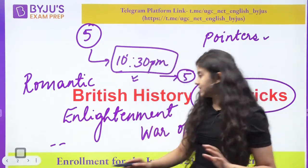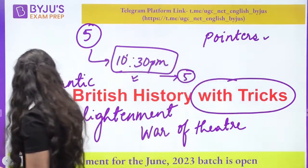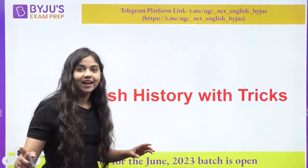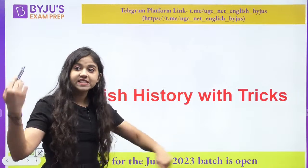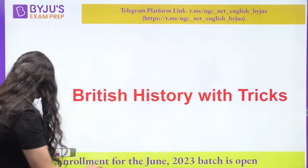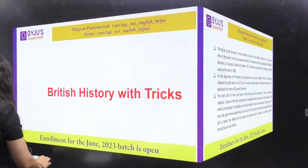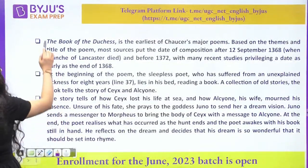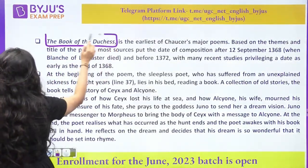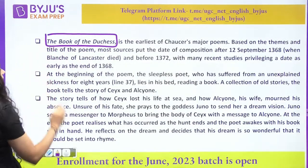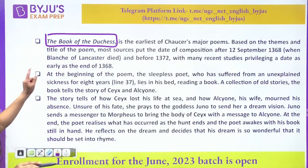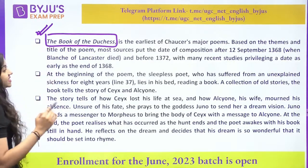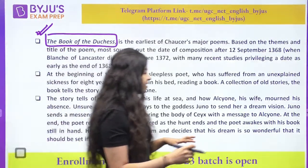Today we started the class with Chaucer's work, which features Morpheus. Remember the Book of Duchess — this is how you have to make connections and recollect everything. That is the first important point for British literature today: Book of Duchess by Geoffrey Chaucer. This particular work, Book of Duchess, was an elegy that was written. When we look at Book of Duchess, we can see the character of Morpheus coming in — a question I had shared on the Telegram platform.